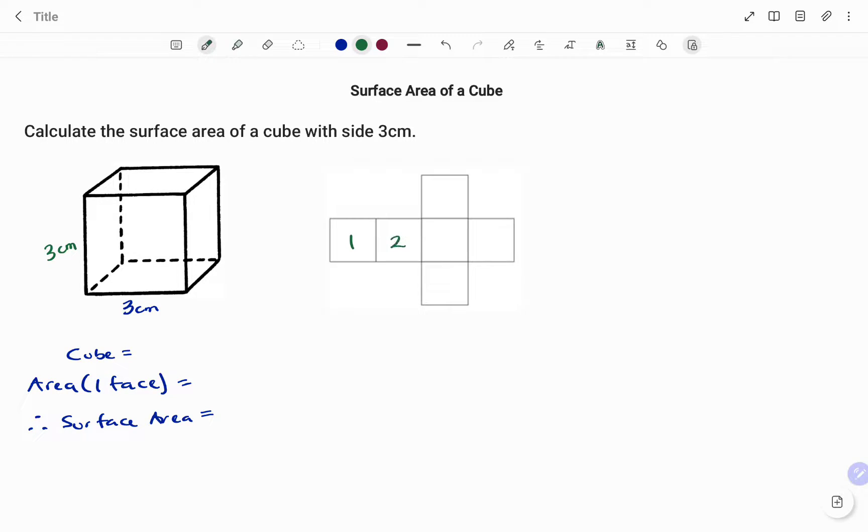A cube has six faces. So therefore, cube equals 6 faces. And because it has six faces, if I can find the area of one face, then I just need to multiply that by 6 to find the surface area.